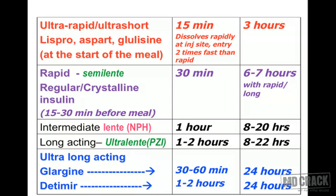The classification table shows onset of action and duration of action for each insulin group. The first group is ultra-rapid acting (ultra-short acting) insulins, with an onset of action of about 15 minutes and duration of approximately three hours. Three insulins belong to this group: insulin lispro, insulin aspart, and insulin glulisine.